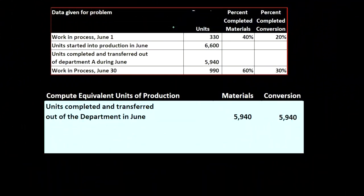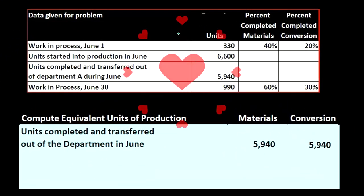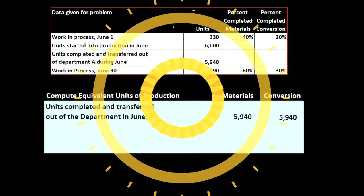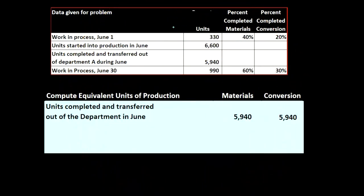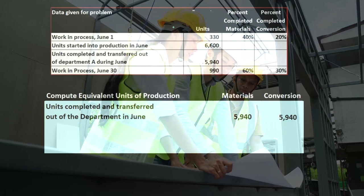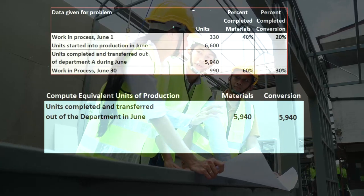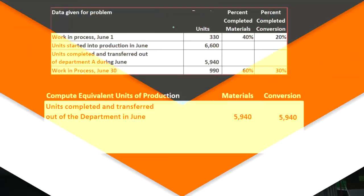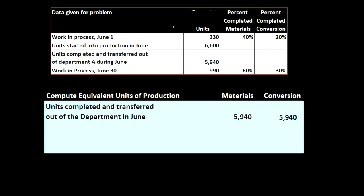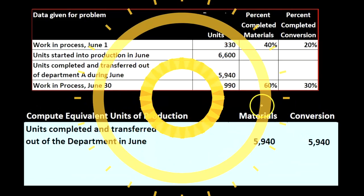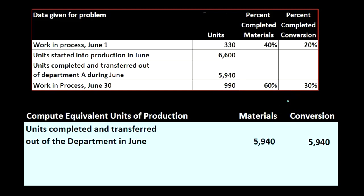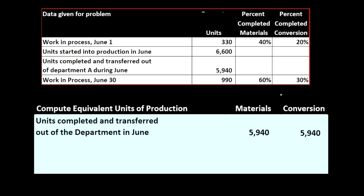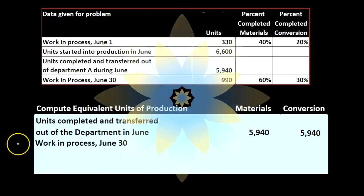Remember there are three components we typically think about when considering inventory: materials, overhead, and labor. Here we are combining together the conversion — which is the labor and the overhead — and having materials broken out separately. One reason we might do that is that labor could actually be low in a production process, so in any case we have two items we're breaking out and we're considering the level of completeness based on those two different items.